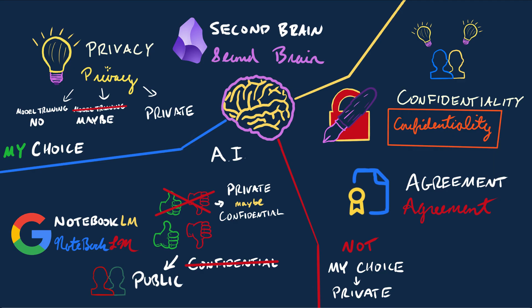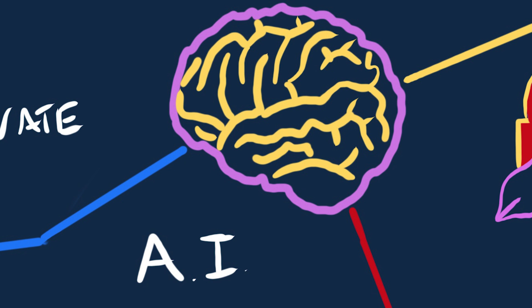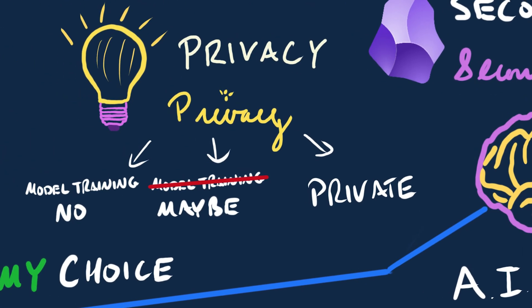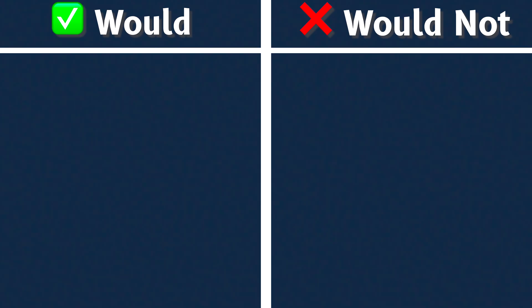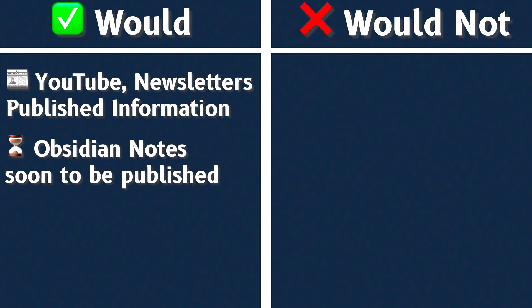Assuming that everyone should be able to take everything for free provides a chilling effect on original creativity. That said, the internet is obviously a treasure trove of collective intelligence, and large language models like Gemini or GPT-4o are enabling us to access this information at an entirely new level, which requires some element of openness. In my opinion, there needs to be a balance where creators and knowledge workers can opt in to having their work used for training. The choice shouldn't be made automatically for each person.